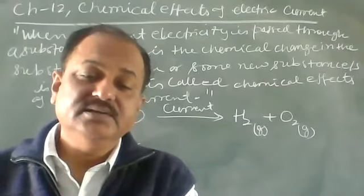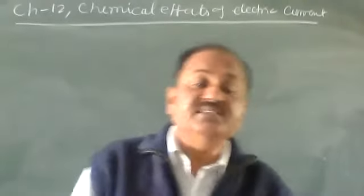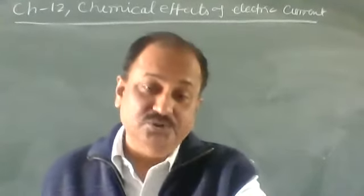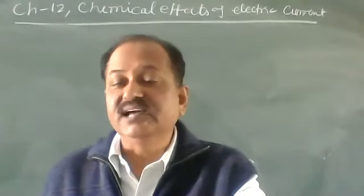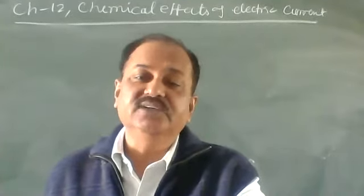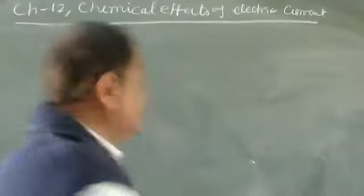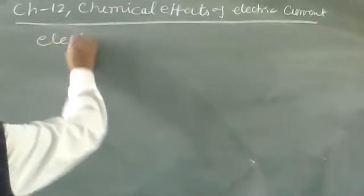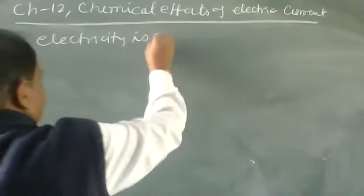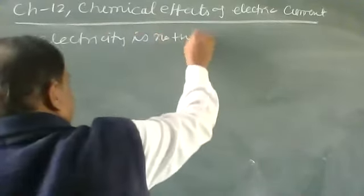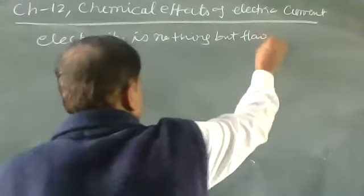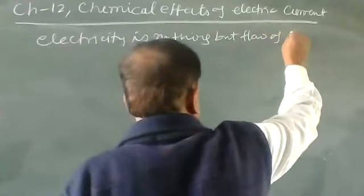Electrical current or electricity is nothing but the flow of electrons, or the flow of charge. Flow of electrons or flow of charge is called as electricity.